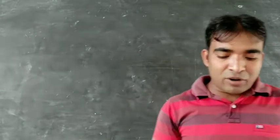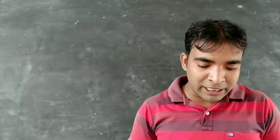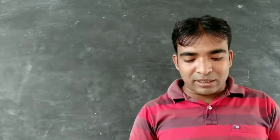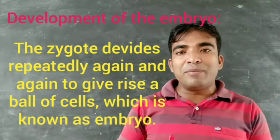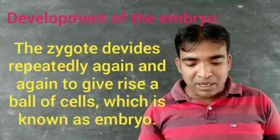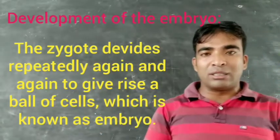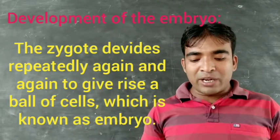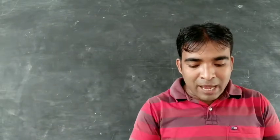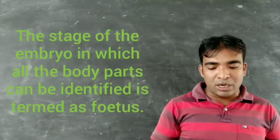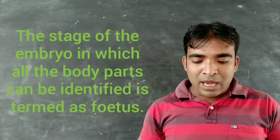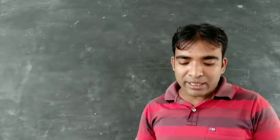Now we will discuss the development of the embryo. Fertilization results in the formation of a zygote, which begins to develop into an embryo. The zygote divides repeatedly again and again to give a structure like a ball of cells. This ball then begins to form groups that develop into different tissues and organs — this structure is known as the embryo. The embryo gets embedded in the wall of the uterus, where further development takes place. It gradually develops body parts like head, legs, hands, etc. When all body parts are developed, this structure is known as the fetus.